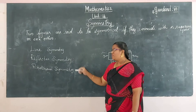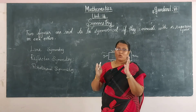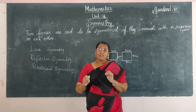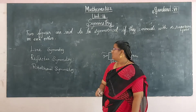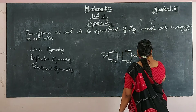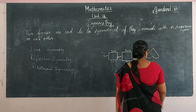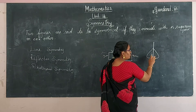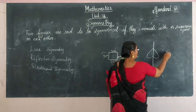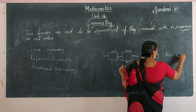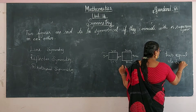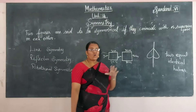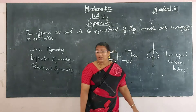The first one is line symmetry. An object divided by a line into two equal identical halves is called line symmetry, or the line of symmetry. We have considered a figure and using a line it is divided into two identical halves — that is called line symmetry.